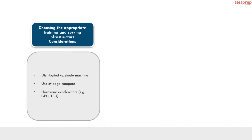Number 3, choosing the appropriate training and serving infrastructure. It contains 3 subtopics: first, distributed versus single machine; second, use of edge compute; third, hardware accelerators, for example GPU, TPU.